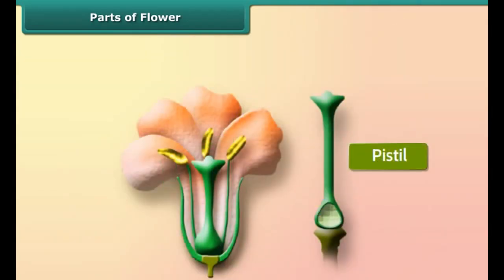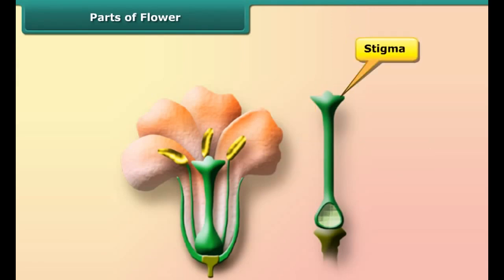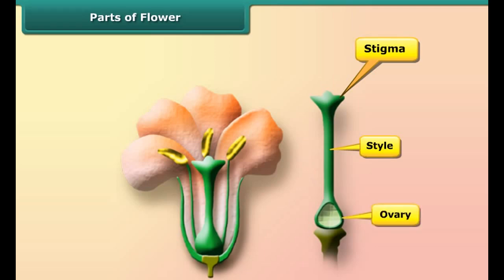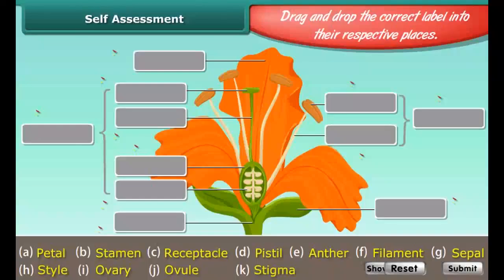The pistil has three parts: stigma, style, and ovary. The stigma is the sticky surface on the top of the pistil — it traps and holds the pollen. The style is the tube-like structure that holds up the stigma, and the ovary contains the ovules. Other important parts of the flower are the petals and sepals. Petals are the colored parts of a flower. Sepals are the green petal-like parts at the base of the flower. The receptacle is the part of the flower stalk where all the parts of the flower are attached.